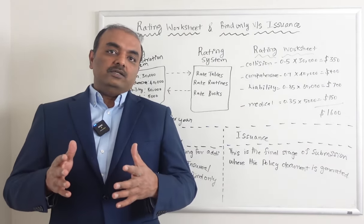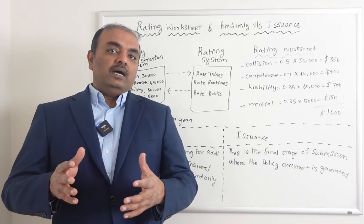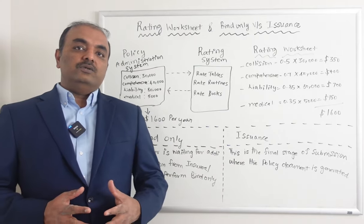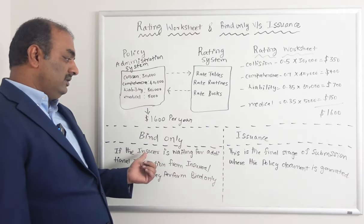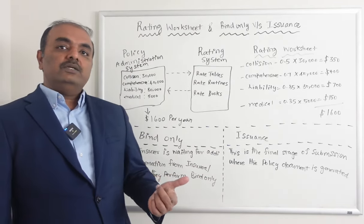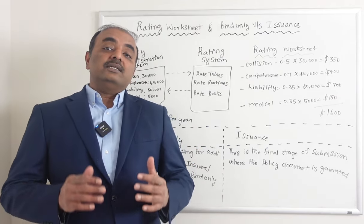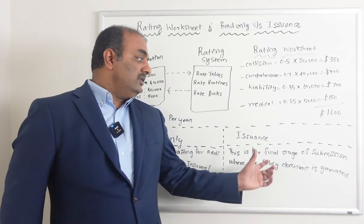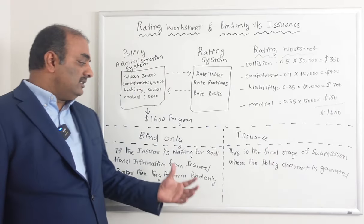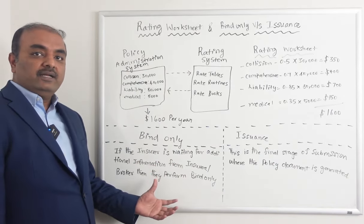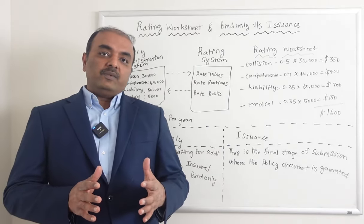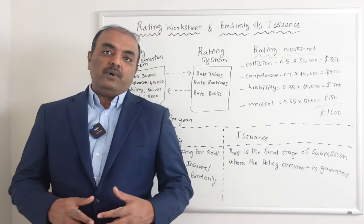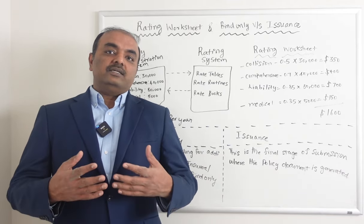Which means the policy will be active, but it's not a valid policy until the policy is issued. Whereas issuance is the final stage — now you have all the information you need from the insured or broker, you are ready to issue the policy, and that's the stage where the actual policy forms will be generated during issuance. So the difference is: bind only is a temporary binder where the policy will be active but it's not the final policy, whereas issuance is the final stage where the policy forms will be generated and sent to the customer.